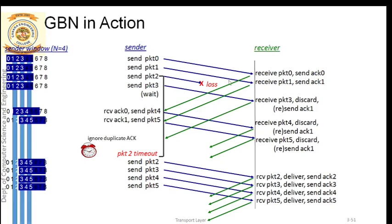But there is one major drawback in Go-Back-N. You can notice here that packets 3, 4 and 5 are three correctly received packets - no corrupted data. Even then the receiver is discarding them. Instead of discarding, can the receiver store those packets? He need not accept or deliver these three packets because the receiver accepts packets in order only. Can he simply store these correctly received packets in his buffer?